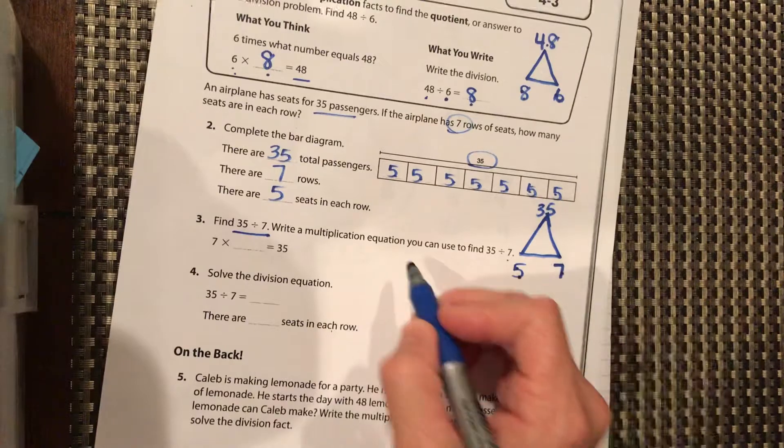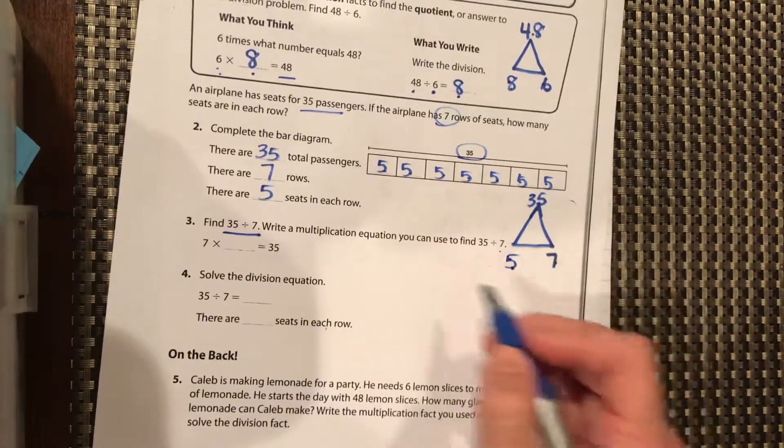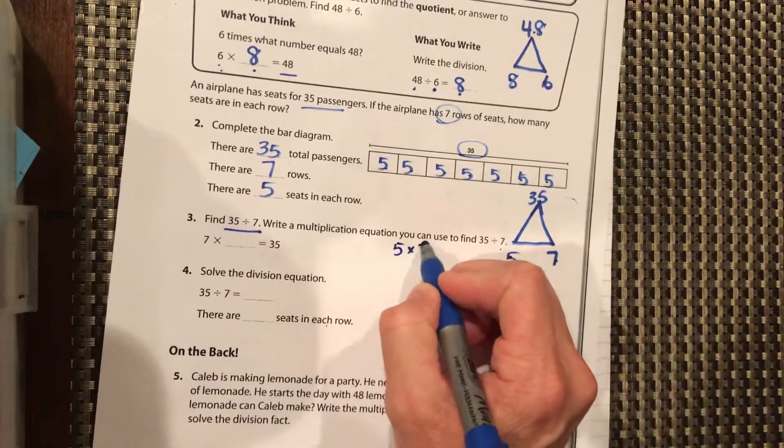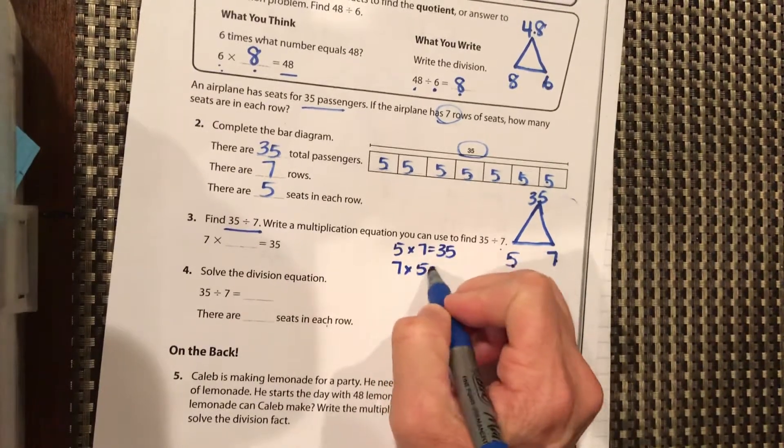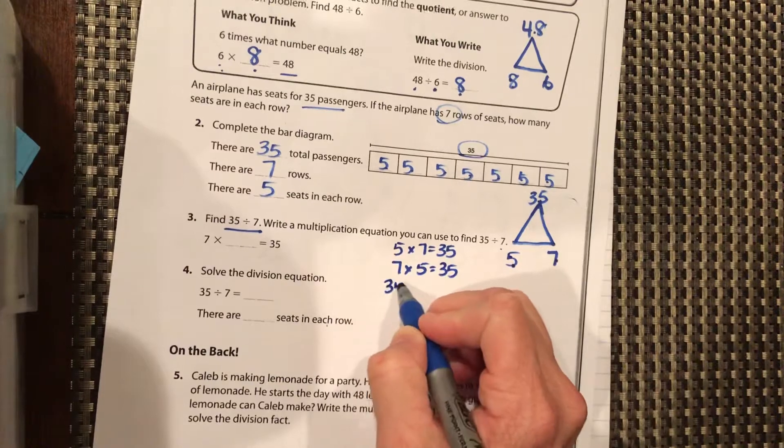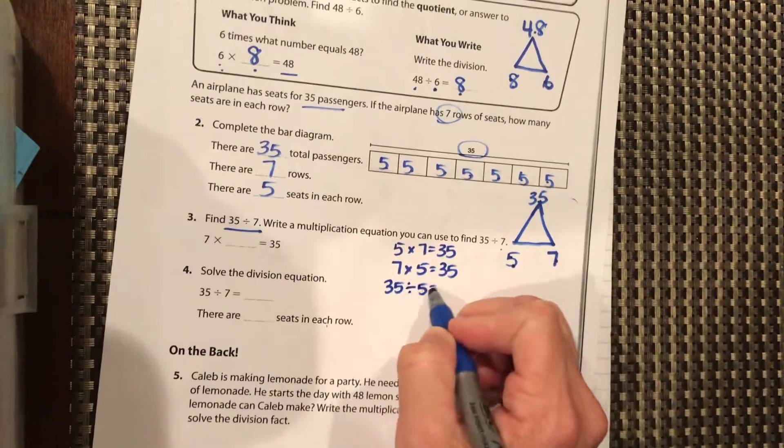Well, that's easy because we know with this pyramid here, we can do 5 times 7 equals 35, 7 times 5 equals 35, 35 divided by 5 equals 7.